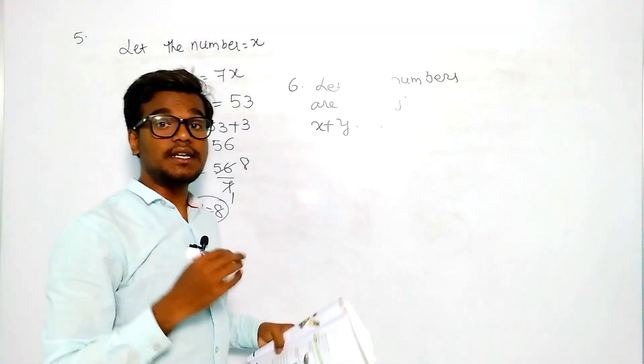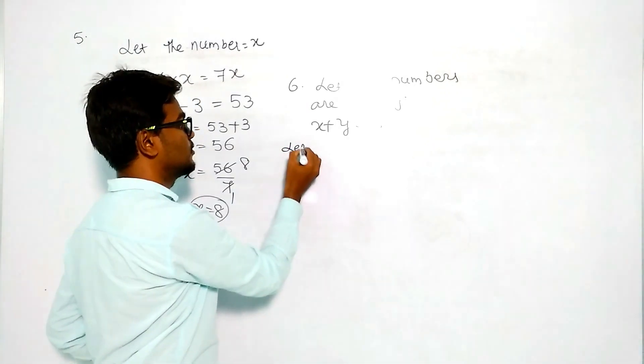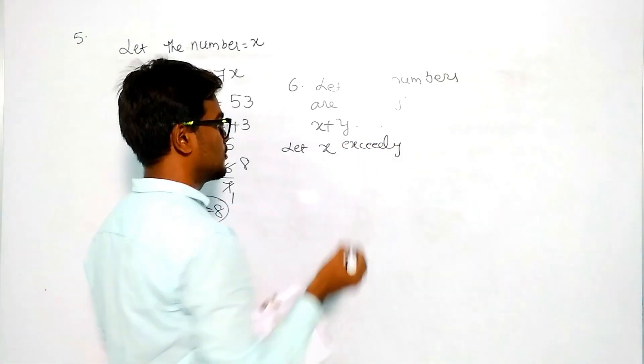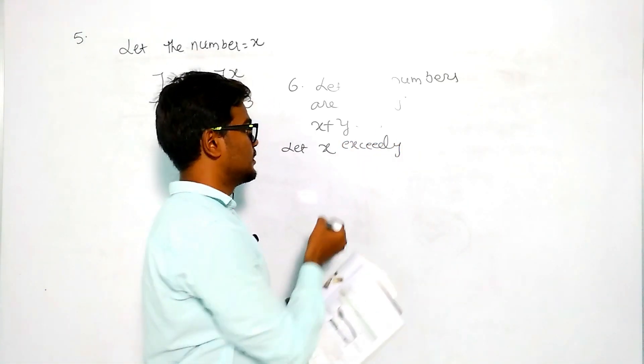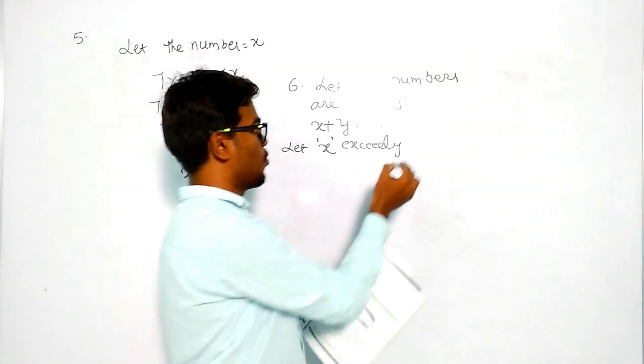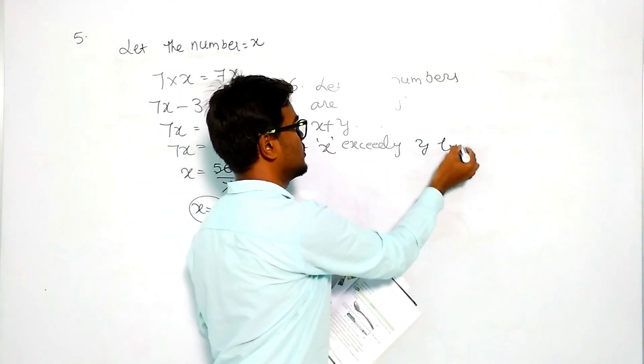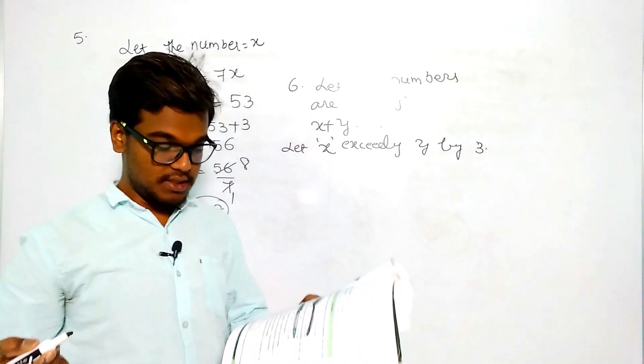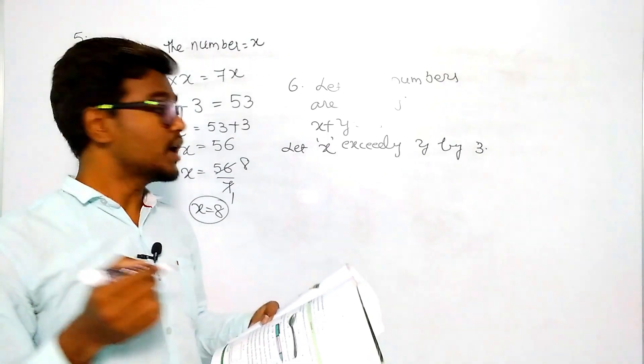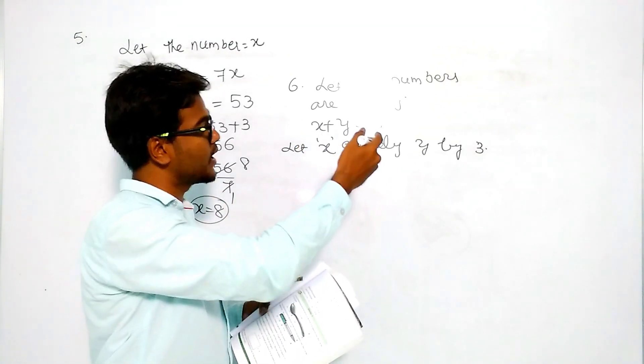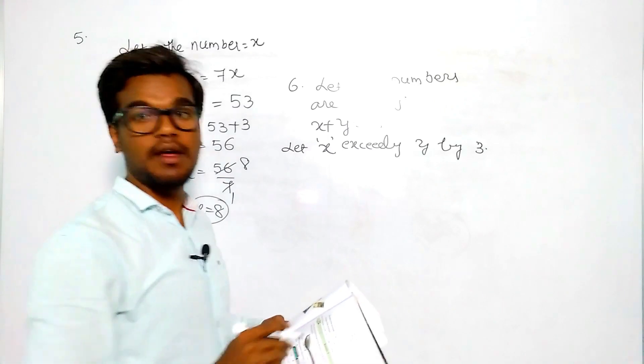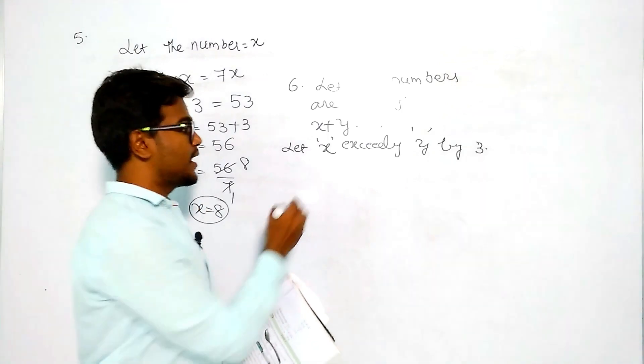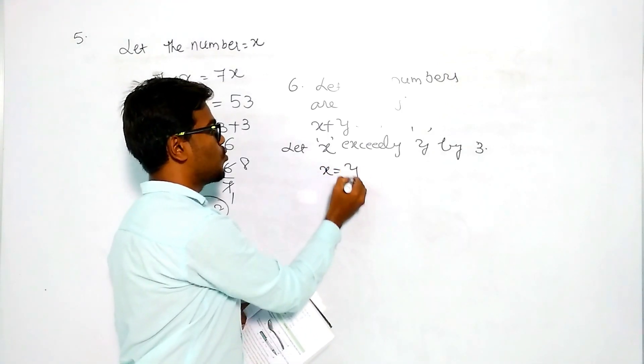One exceeds the other - let x exceed y by three. You can also take let y exceeds x by three, whatever it is. Then the equation is x equals y plus 3.